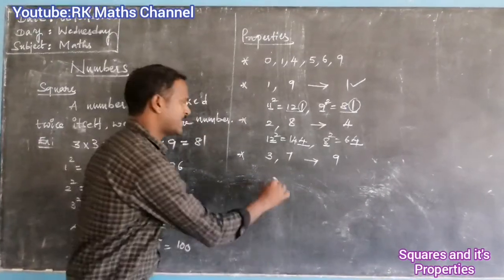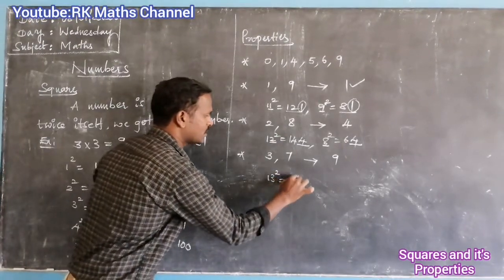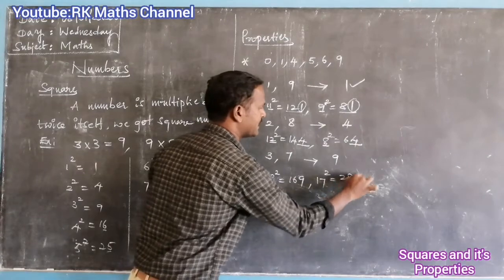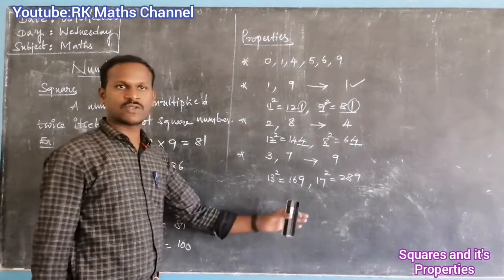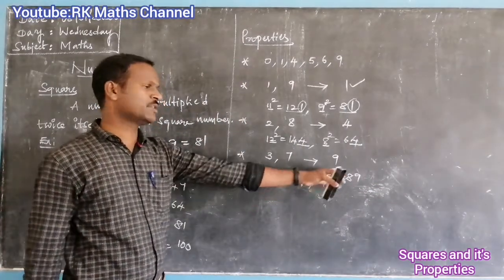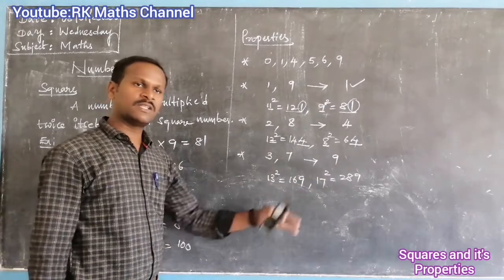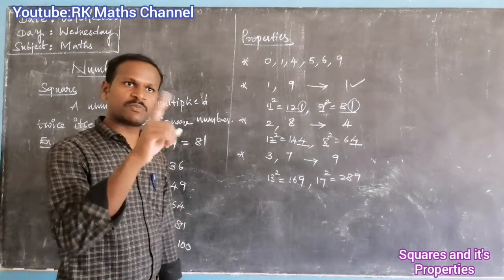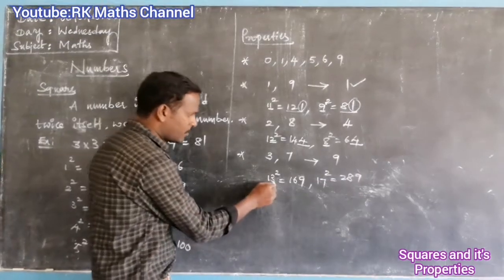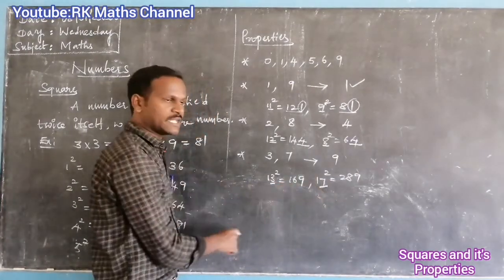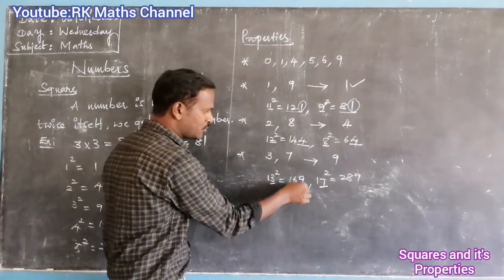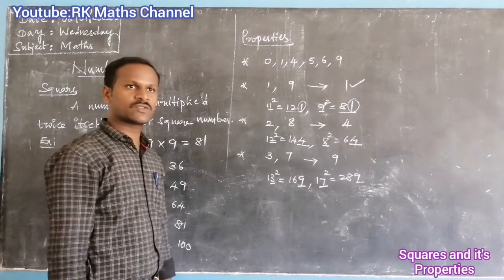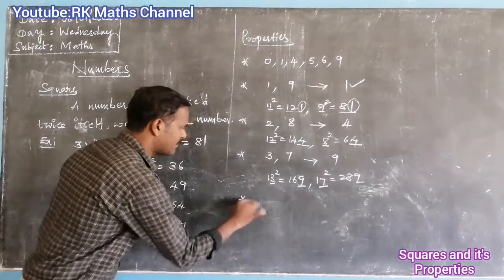For example, 13 squared is 169, and 17 squared is 289. Also, 7 squared is 49, and 27 squared is 729. So when the unit place is 3 or 7, the square's unit place is always 9.